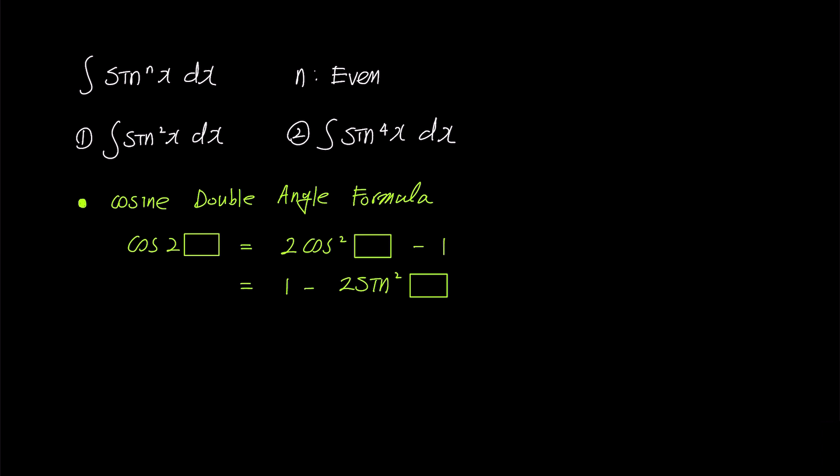You might have found it peculiar that box suddenly appeared instead of x. Shall we substitute x into the box? Then cosine 2x is 2 cosine squared x minus 1 or 1 minus 2 sine squared x.